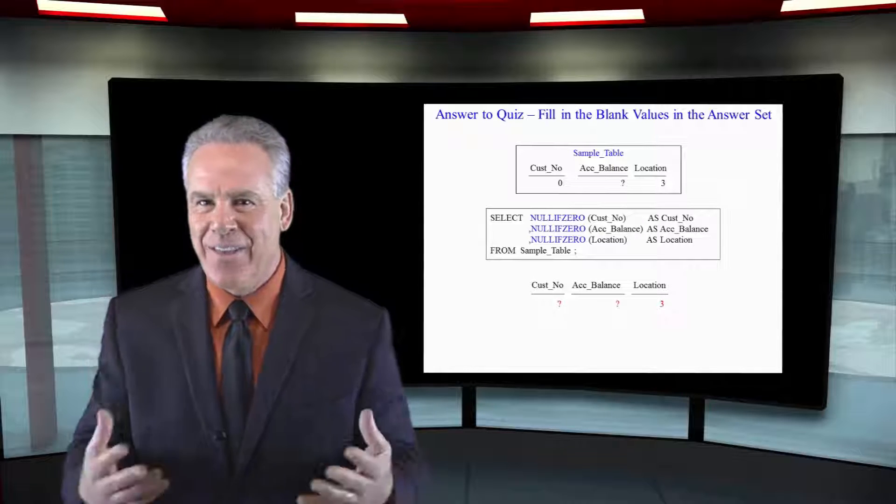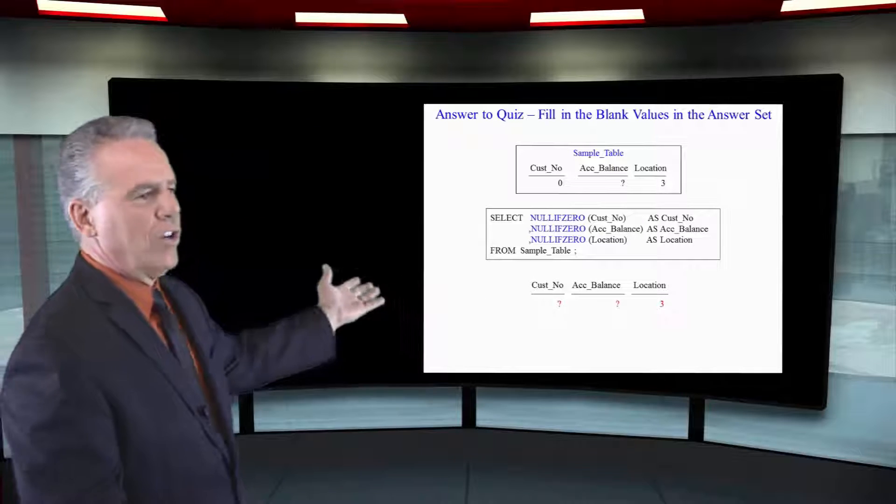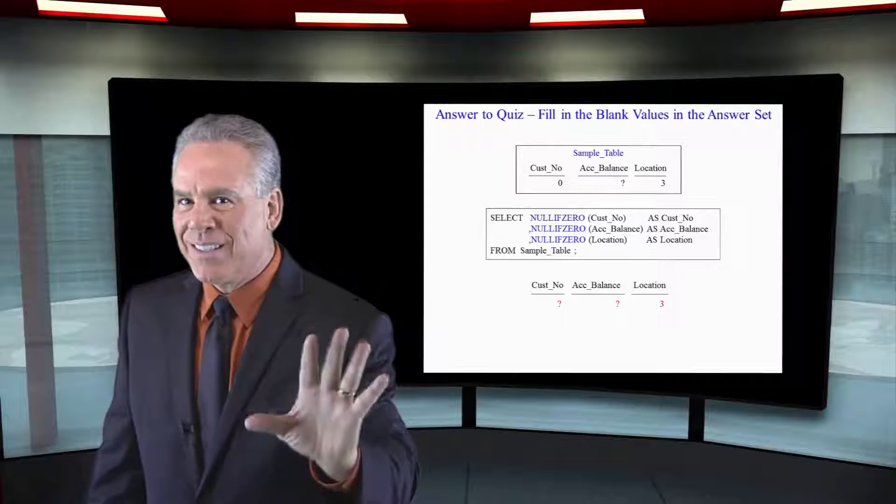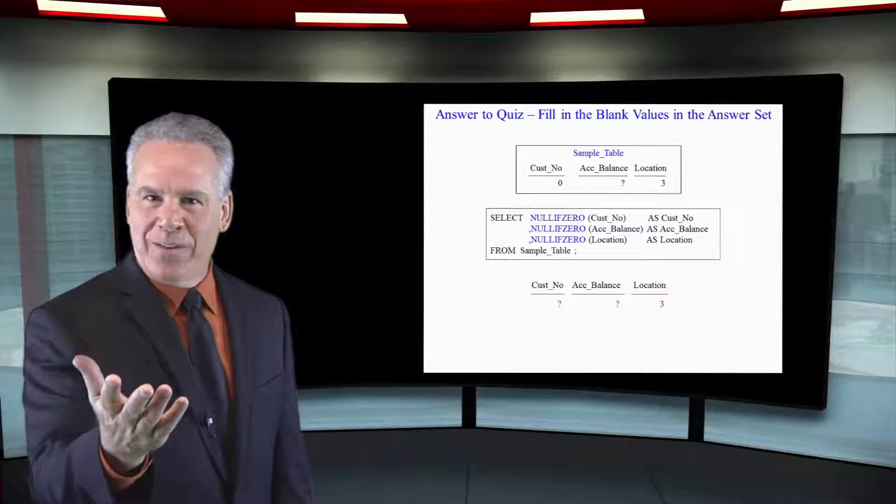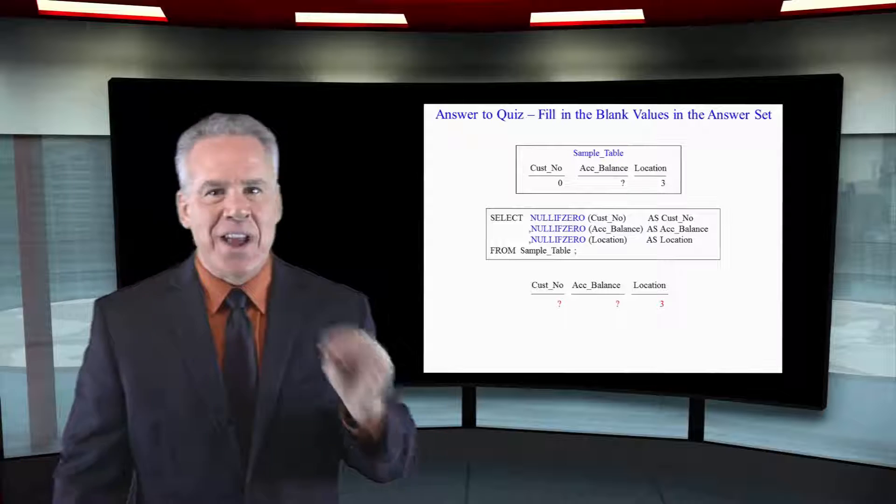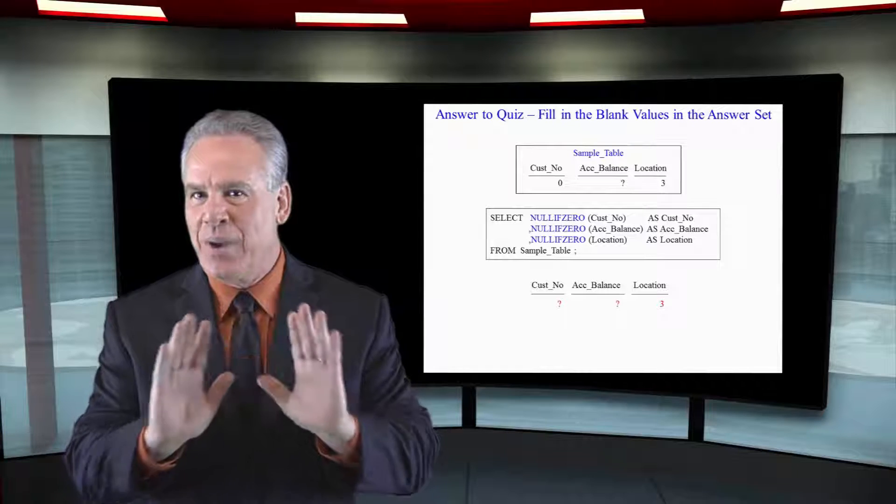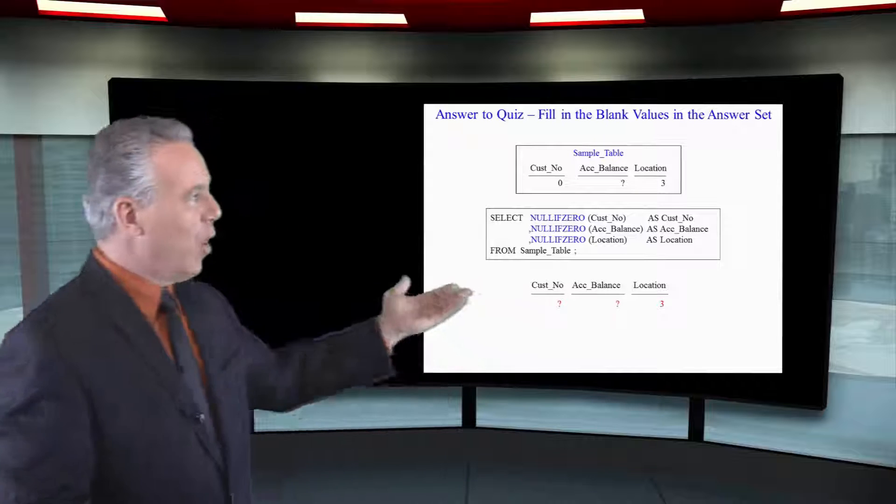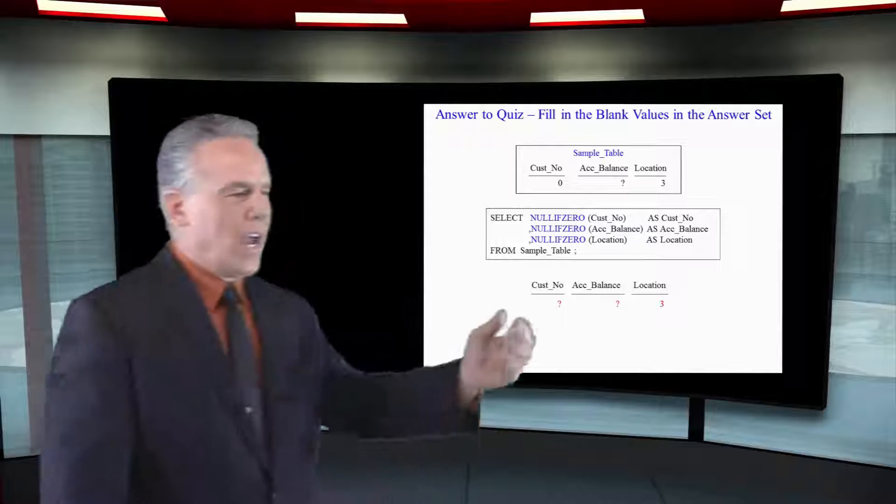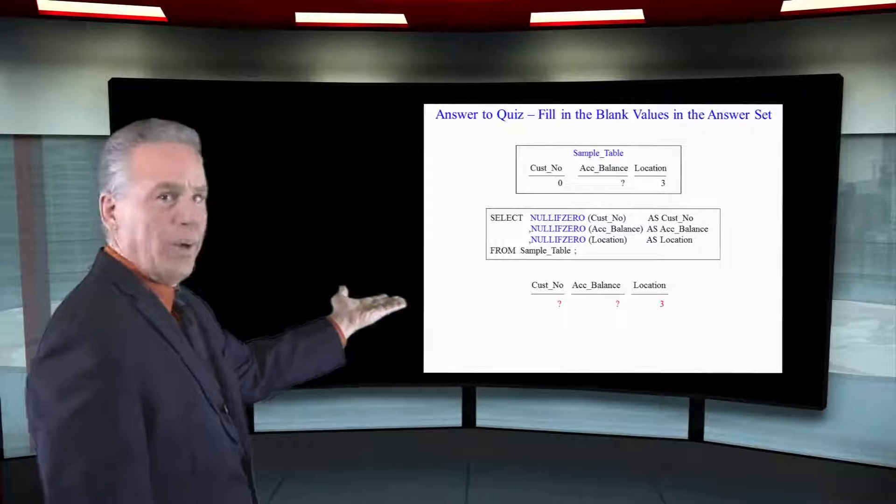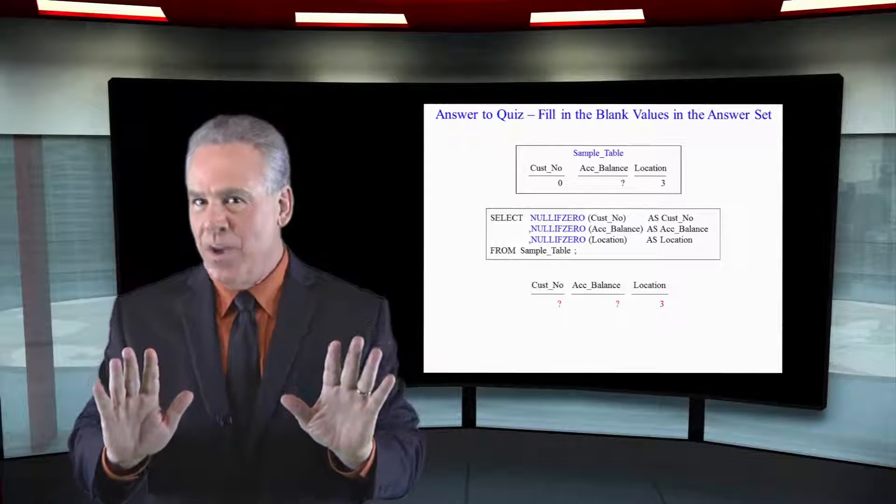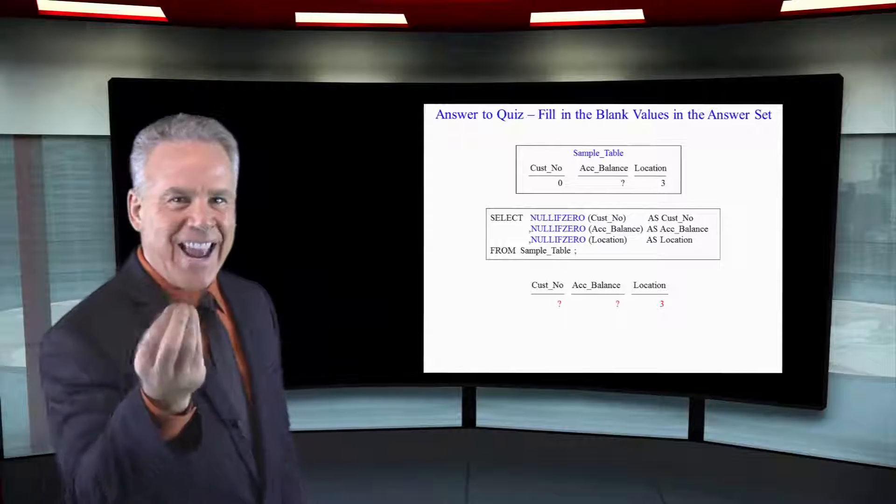Let's take a look at this together. Now we're going to select NULLIFZERO customer number. It is zero. The customer number is zero so it changes it to a null value. Now in the second one where we go for account balance it's not a zero so the system's not going to do anything to it. And it was already null so it returns a null. Now lastly we've got a location of 3. We're NULLIFZERO-ing that. It's not a zero so we're not going to do any changes to it. It was a 3. It stays a 3.